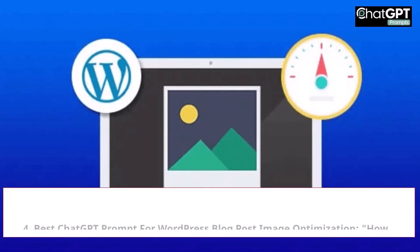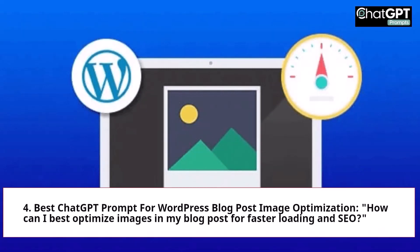Prompt 4 — Image Optimization: How can I best optimize images in my blog post for faster loading and SEO?